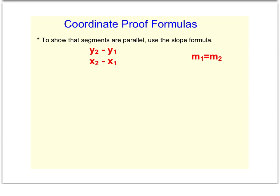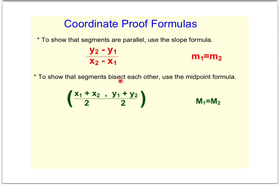You might want to jot down a couple other formulas we'll be using in some homework and other problems. We may be asked to show that segments bisect each other, and in that case — to show that diagonals specifically bisect each other — we would use the midpoint formula. The midpoint formula is the average of the x's and the average of the y's. It gives a point, and this will prove that one midpoint is equal to another midpoint.